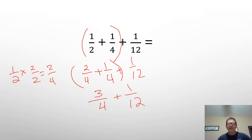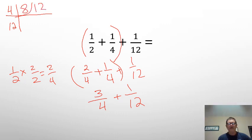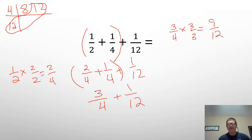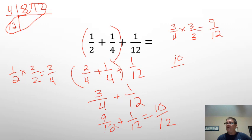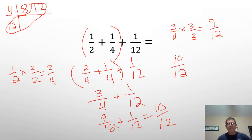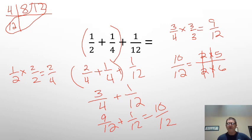Now I have 3/4 plus 1/12. Once again I can ask: can I turn one into the other? I'm going to go 4, 8, 12 — look at that, they both can be turned into 12. So I'm going to take my 3/4 and multiply that by 3/3, which gives me 9/12. So now I have 9/12 plus 1/12 which equals 10/12. Now even though this is reasonable, it is not in simplest form. I can see both numbers are even, so they're divisible by 2. I know 2 times 5 and 2 times 6 will give me 12. So now I have 5/6.